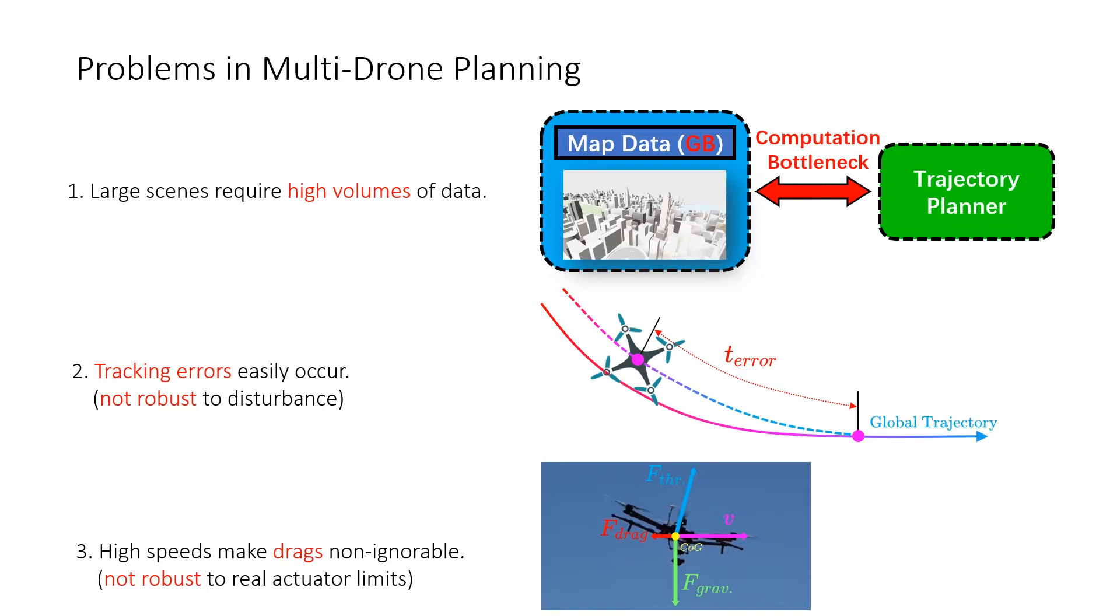Secondly, tracking errors often occur in flight, which can cause collisions and pose threats to the whole system.